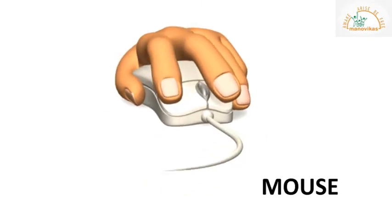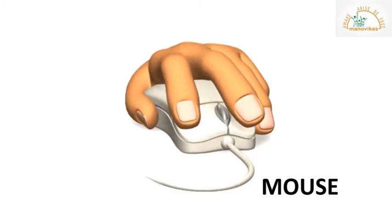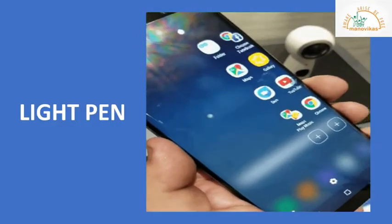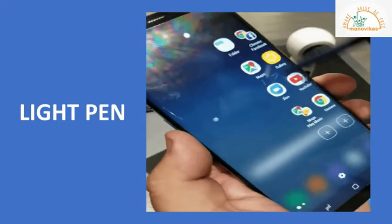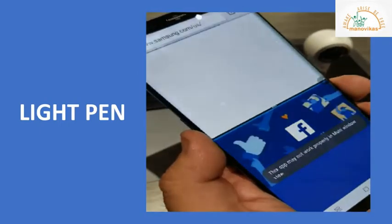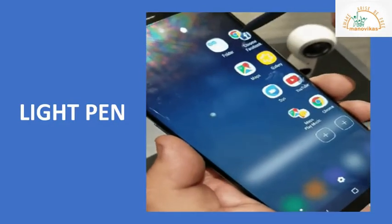A light pen is a light sensitive computer input device. It is used to select text, draw pictures and interact with the computer screen or monitor.